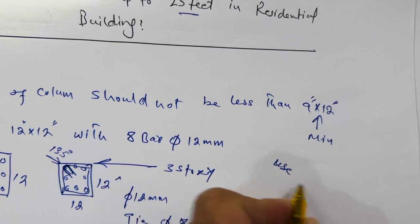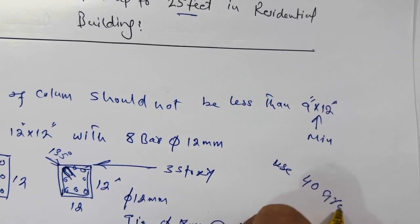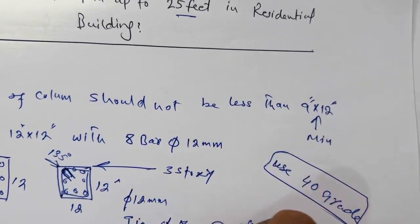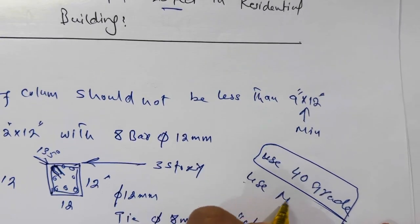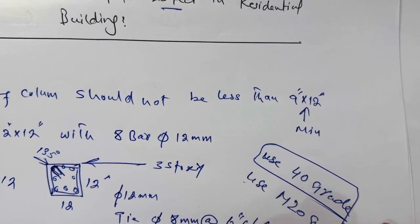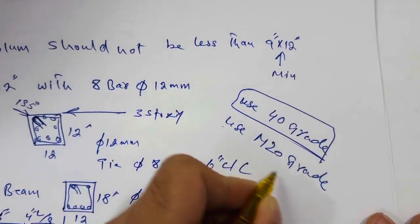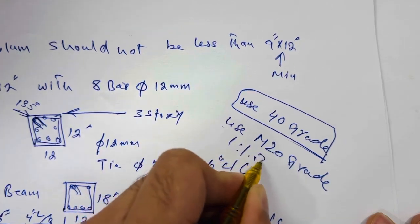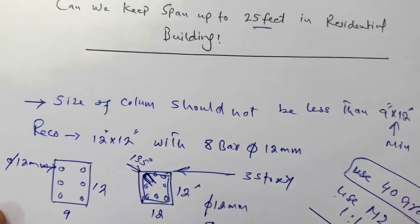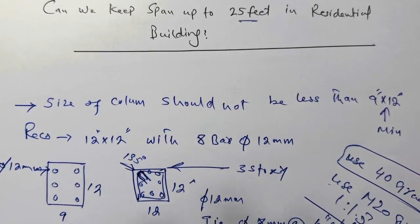Use 40 grade steel rod and use also M20 grade concrete, which ratio is 1 ratio 1.5 ratio 3. Hope this short video can help you. Thanks for watching. See you in next video. Goodbye.